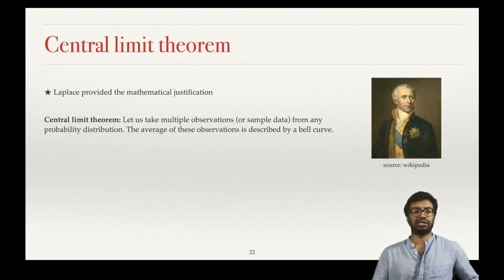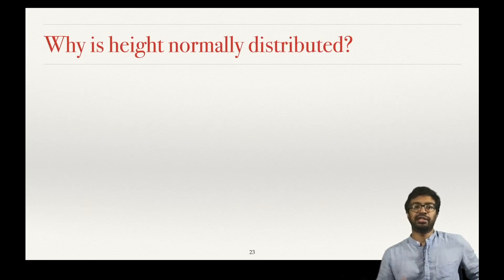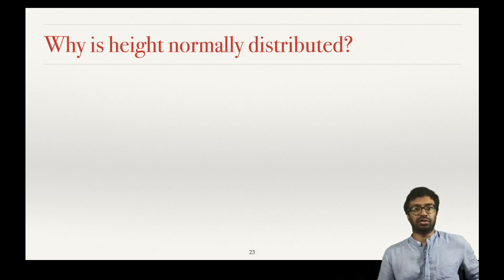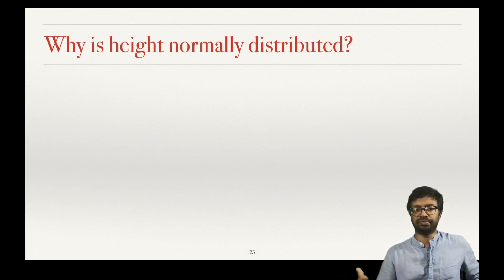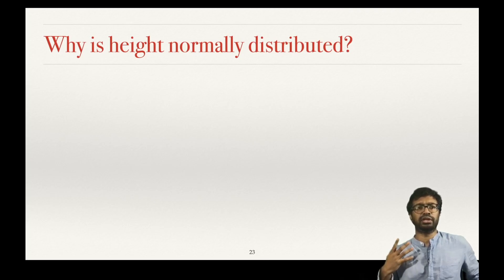Let us see the precise mathematical statement of the central limit theorem. We have seen the normal distribution, how it approximates the binomial distribution, and the central limit theorem — which is the reason why the bell curve is called the normal distribution. This makes the normal distribution fundamental among all distributions.